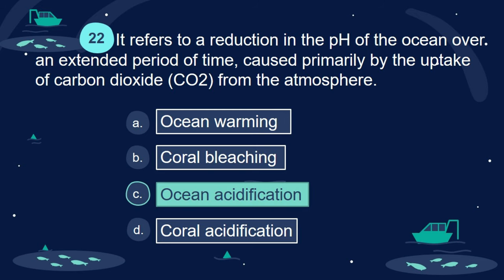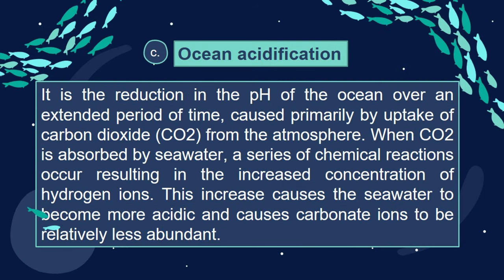Answer: C. Ocean acidification. Ocean acidification occurs resulting in the increased concentration of hydrogen ions. This increase causes the seawater to become more acidic and causes carbonate ions to be relatively less abundant.